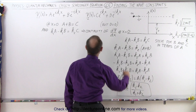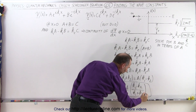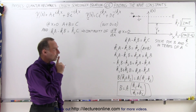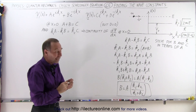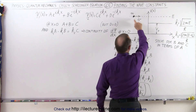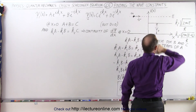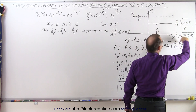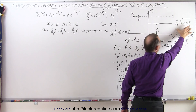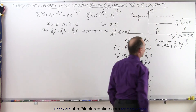This equation allows us to eliminate b by replacing it with this expression. Keep in mind that k1 and k2 are the wave numbers associated with the particle's wave on each side of the boundary, and these wave numbers are defined by the energies the particle has on the left side and on the right side.